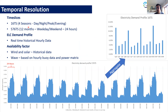Typically in TIMES models, we represent time slices in seasonal resolution with day, night, evening, and peak resolution. In developing TIM, we've done different specifications going from 576 time slices representing 12 months, a weekday, a weekend, and 24-hour resolution. We're bringing in historical hourly demand data, historical hourly wind and solar data, and historical hourly wave and tidal data based on ocean buoys off the coast of Ireland. So we're going from typical seasonal-level specification to something with hourly resolution and chronology.